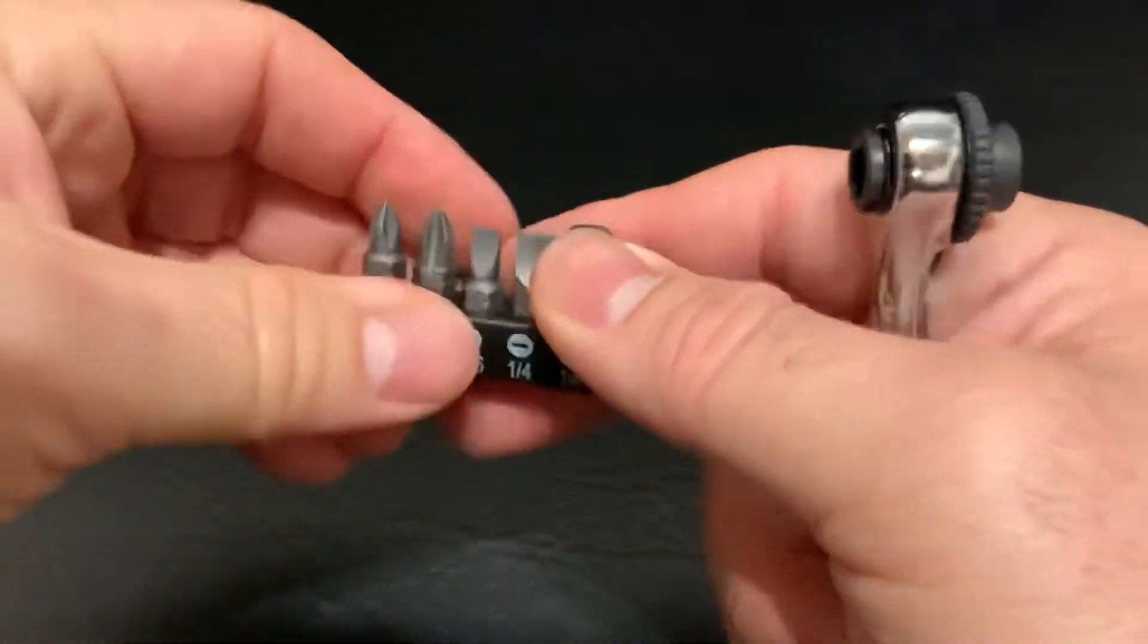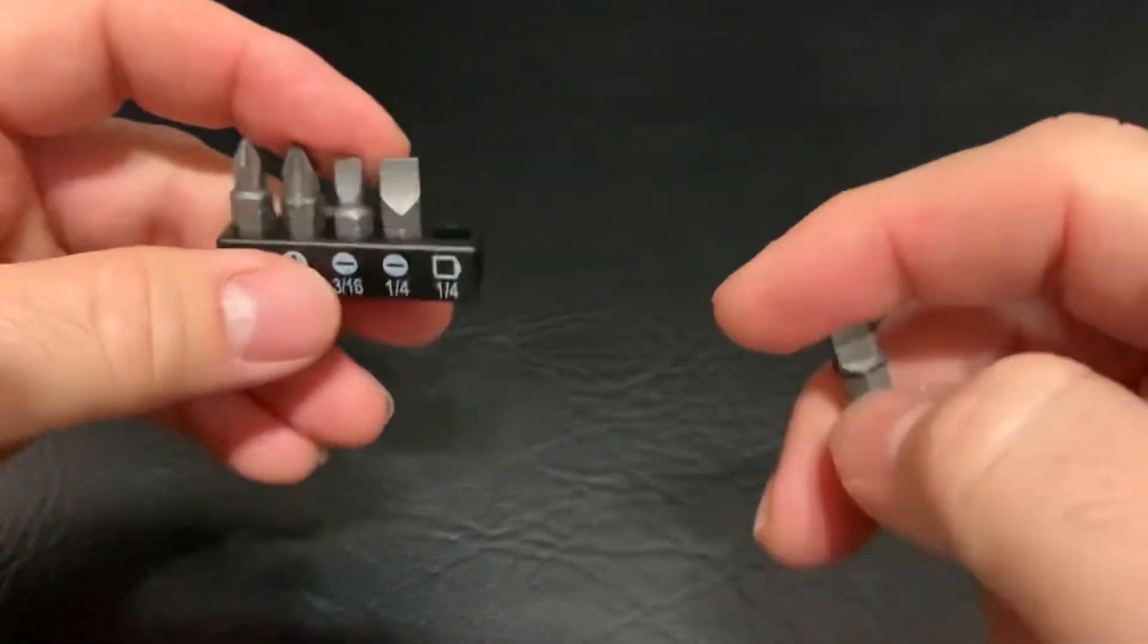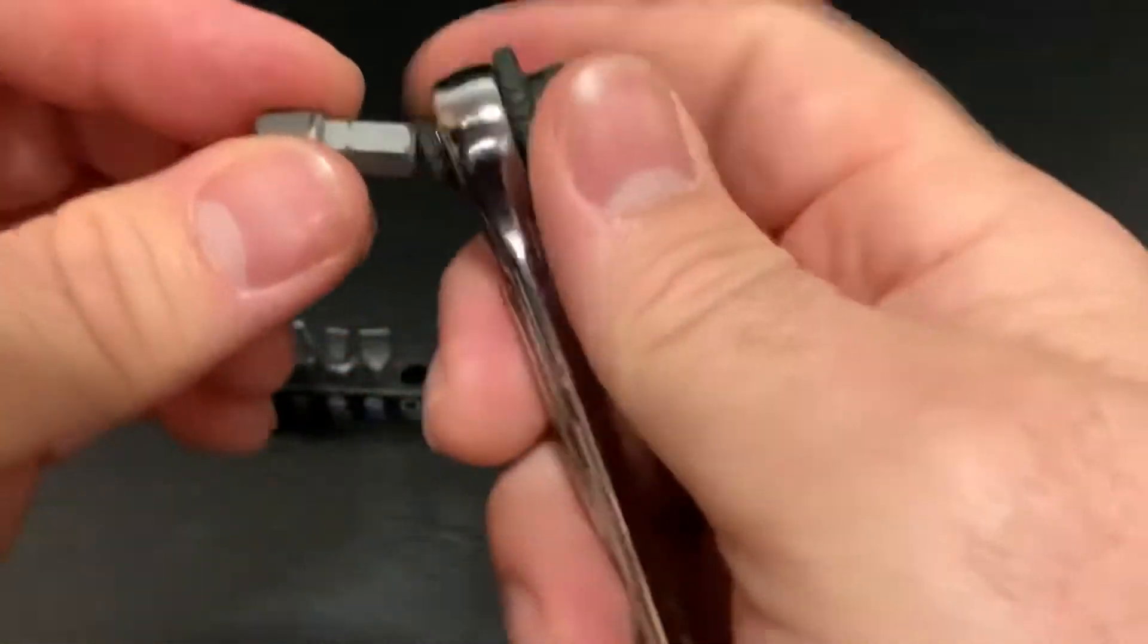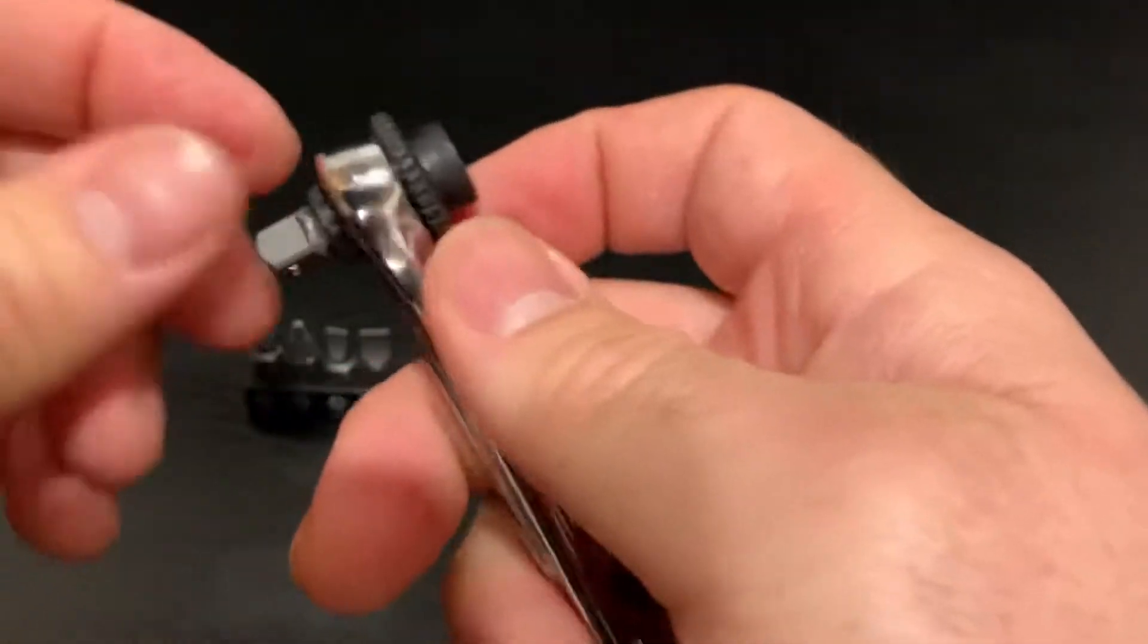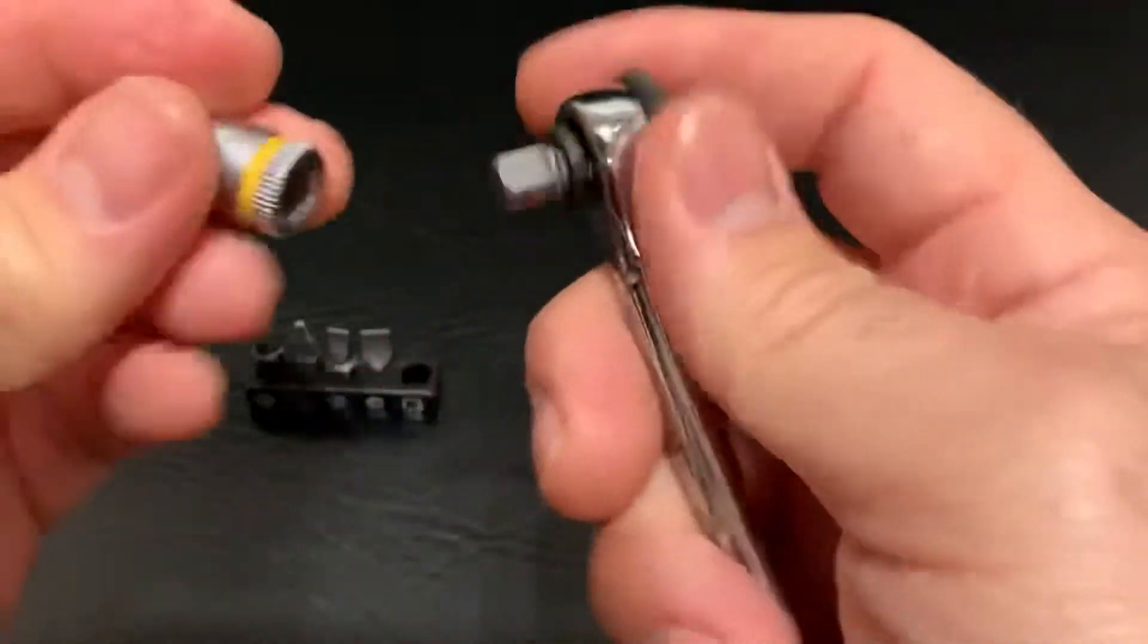And we have the quarter inch drive and then three sixteenths and a quarter inch fly head quarter inch drive. Pretty cool, I like that. Turns it into a little ratchet, pretty sweet. Try it with a socket right here.